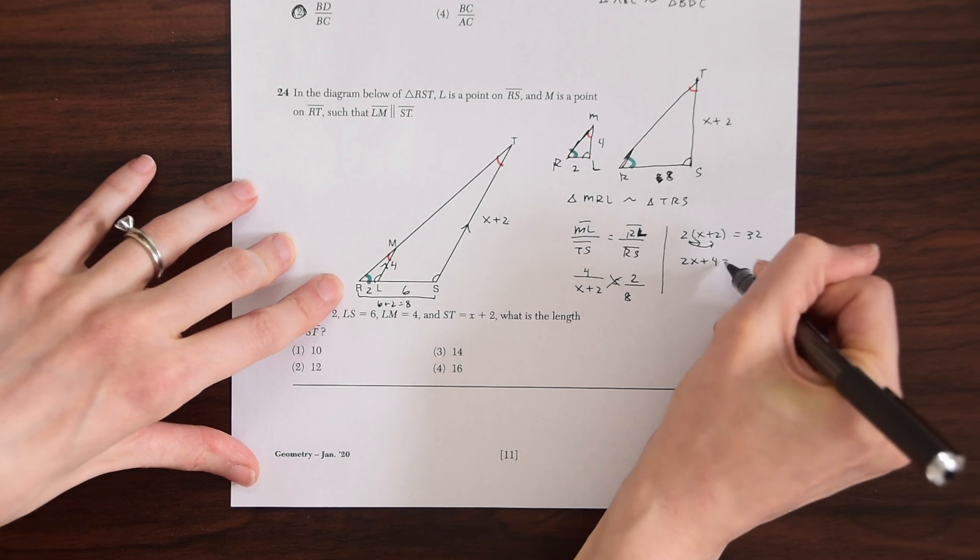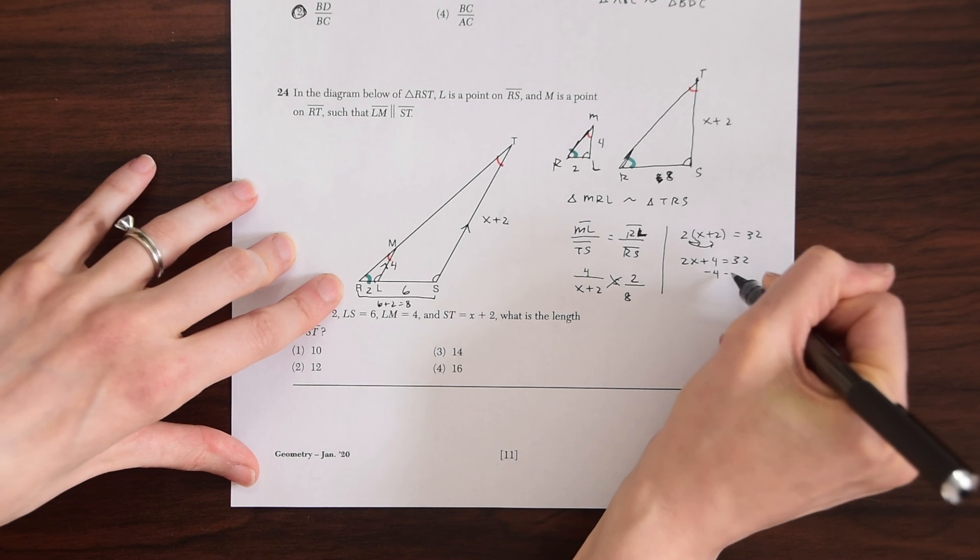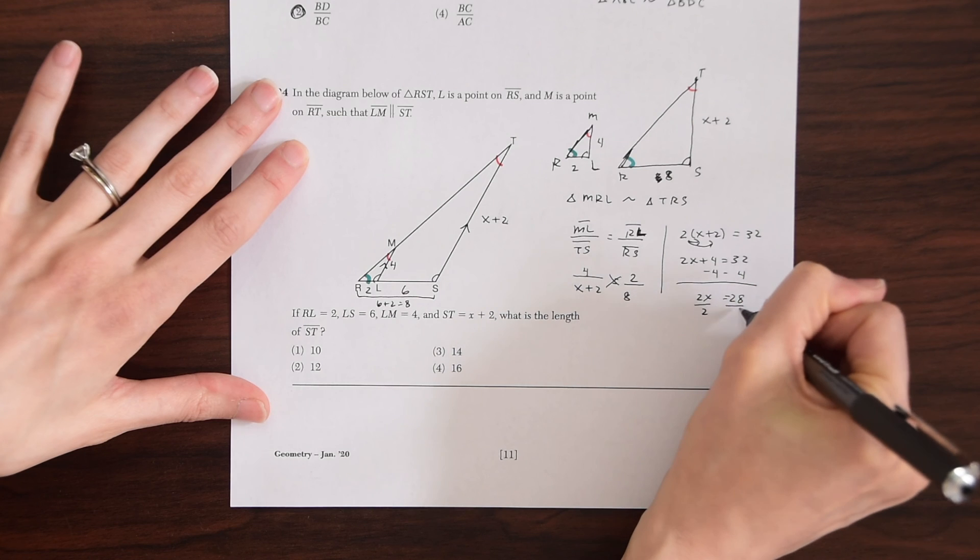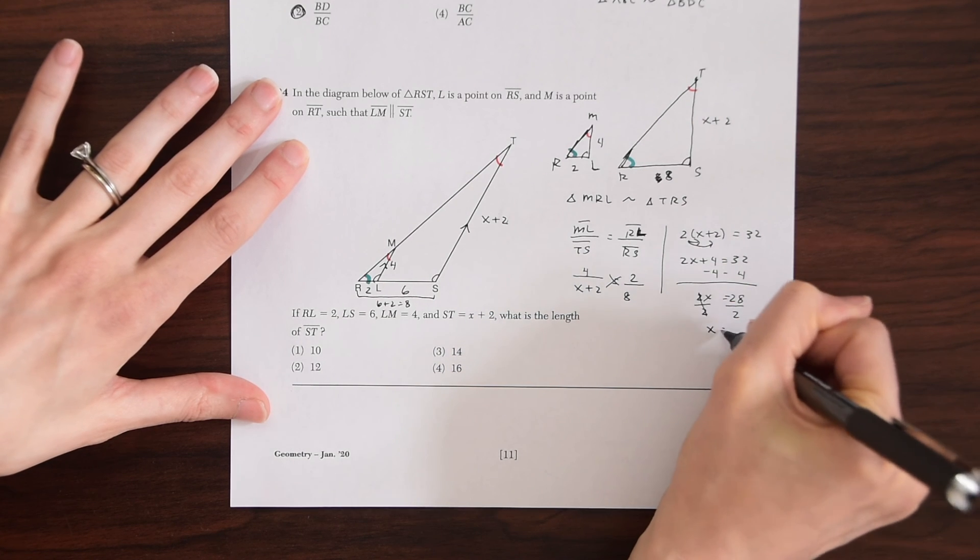And when we do that, we get 2X plus 4 is equal to 32. Subtract 4 from both sides and we get 28. Divide by 2 and we get X is equal to 14.